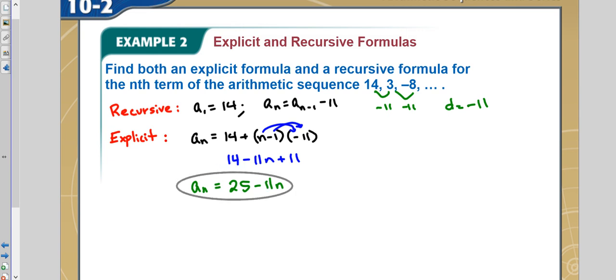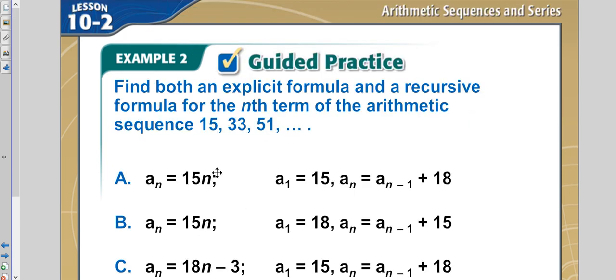If I want to find any term, the 25th term, I would plug in 25 for n, and I would get the answer. And this would be my recursive formula up here. So let's look at the instructions, find both the explicit, there it is, and recursive formula. And so we did everything that's required of us. Now you try to find it for this sequence.